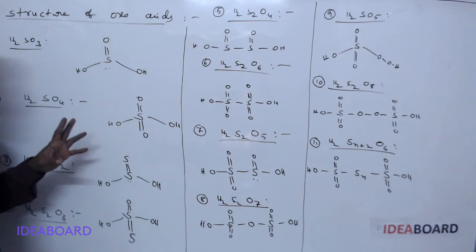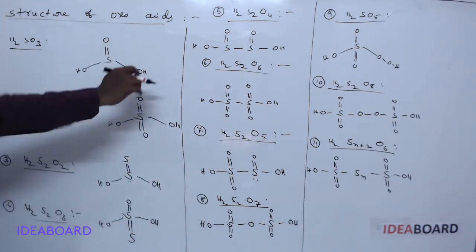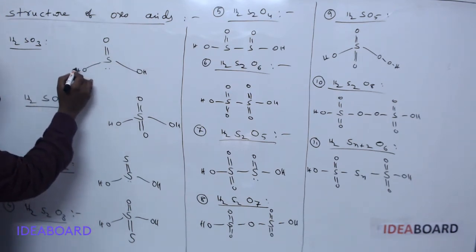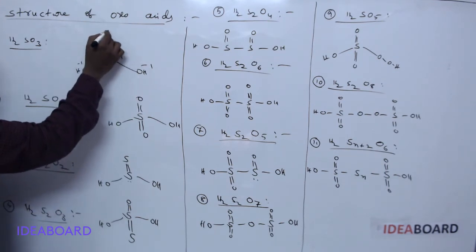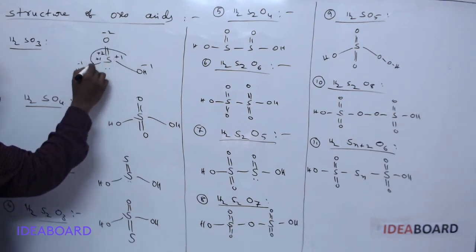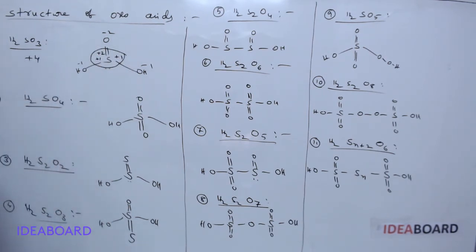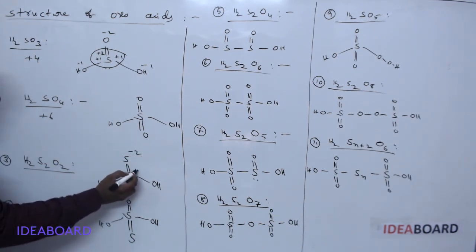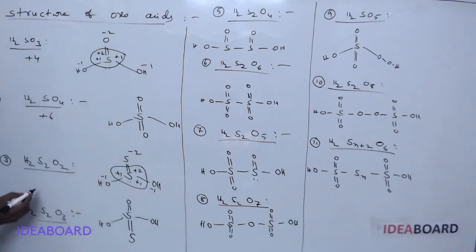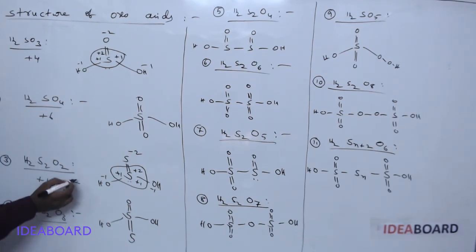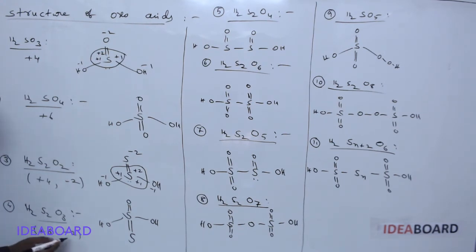Generally, at any sulfur atom the maximum number of bonds is six. For H₂SO₃, oxygen is −2, so sulfur gets +4 oxidation state. For H₂SO₄, sulfur gets +6 oxidation state. In thiosulfurous acid, there are two different oxidation states — one sulfur is +4 and one is −2.